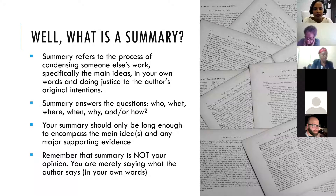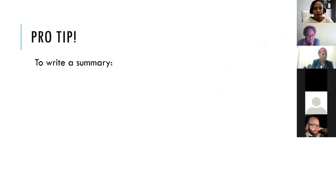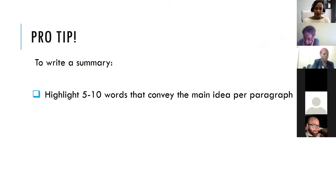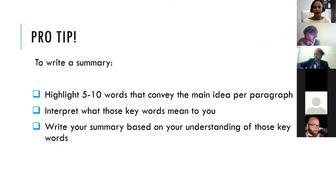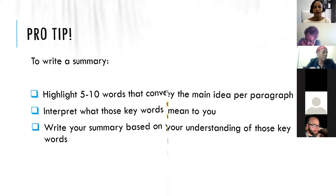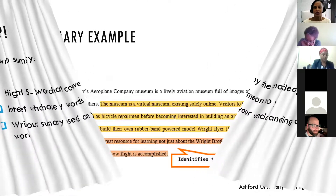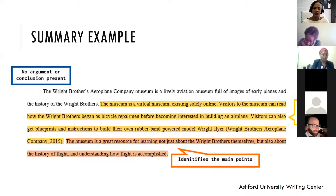Summary answers the questions who, what, when, where, why, and how, and your summary should only be long enough to encompass the main ideas or the main narrative. It's not about your opinion — you're just stating what happens. One good tip for writing a summary, whether for literary analysis or not, is to highlight the key words you see as the main idea, then interpret those keywords and write from that interpretation. What is your understanding of those keywords that jump out at you from the original? Summarize that in your own way, and you're in a good position to write an actual summary.